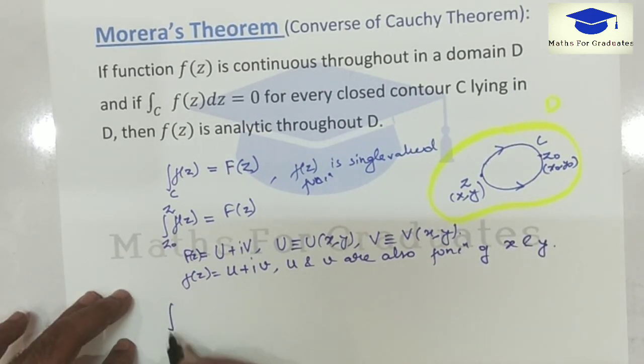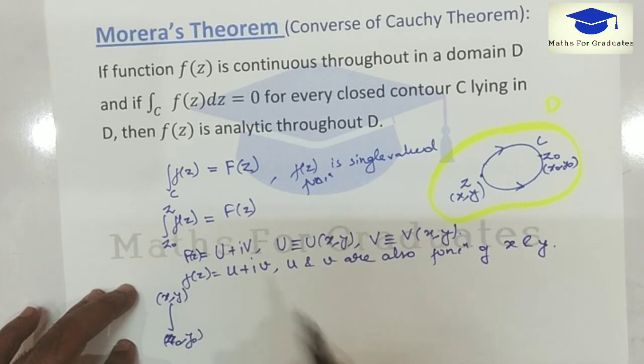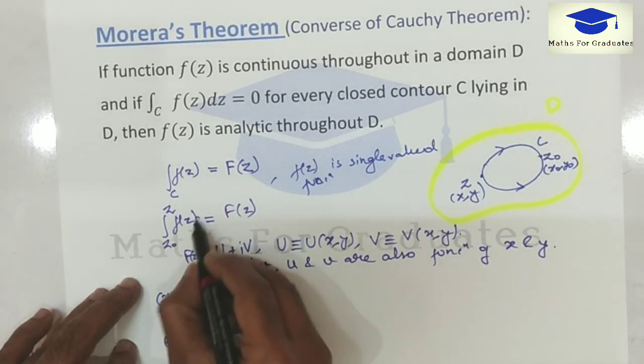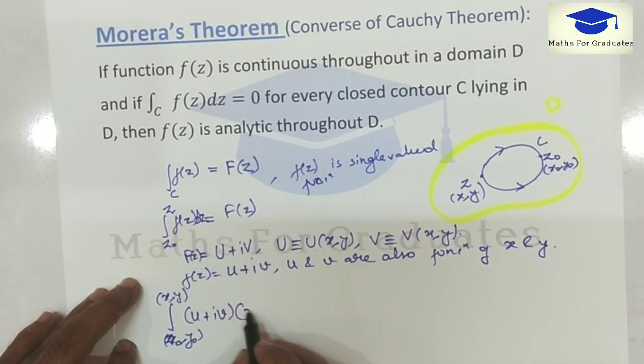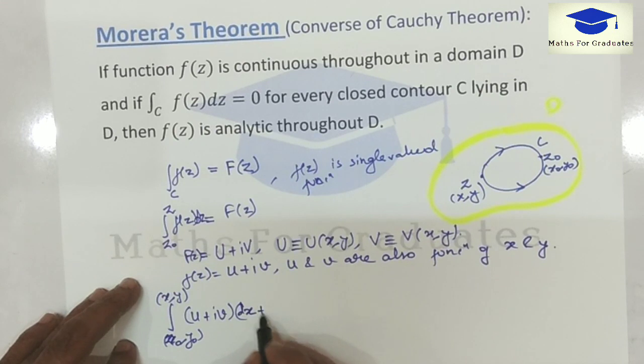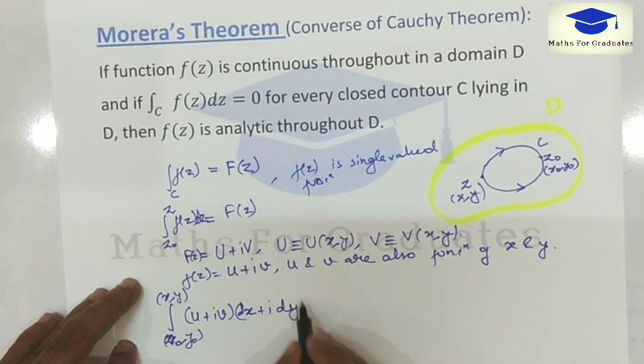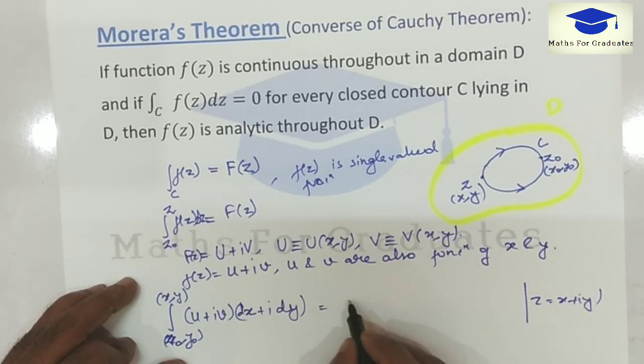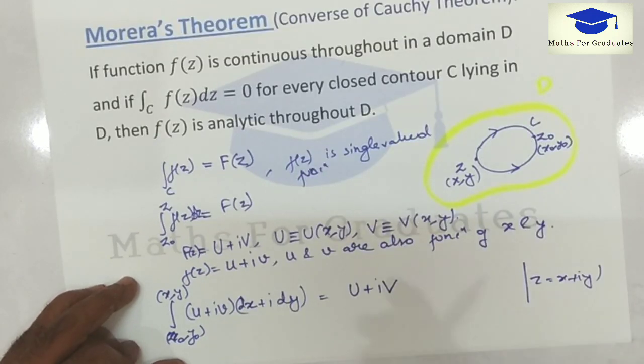Now putting this value, f(z) is u plus i times v, and dz is dx plus i times dy, since z is x plus iy. And this capital F(z) is U plus i times capital V.